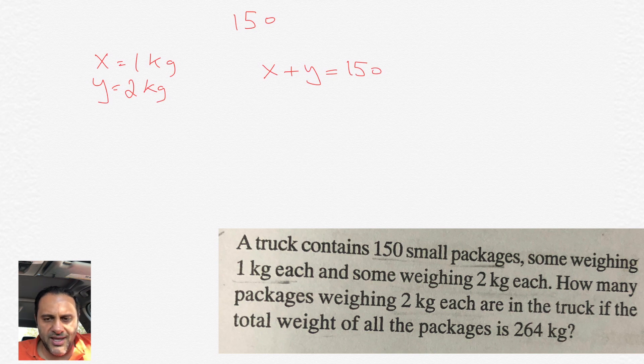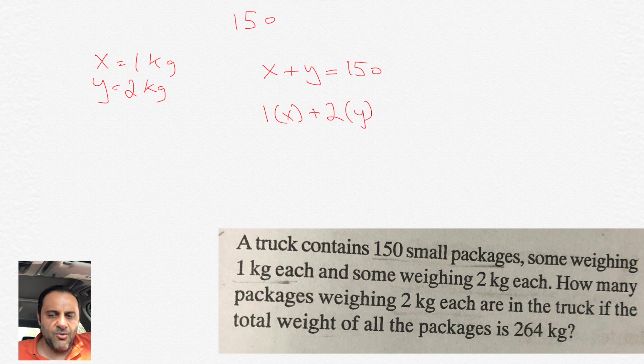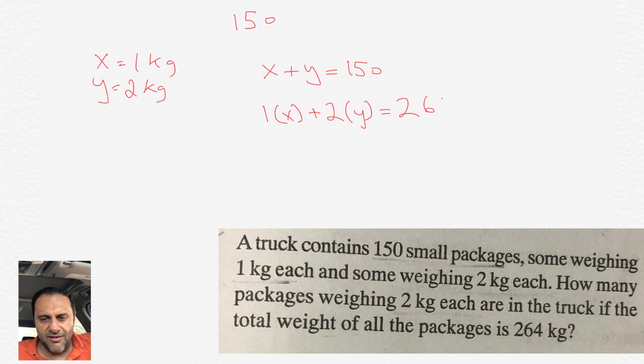We have X plus Y equals 150, and to calculate the weight you would multiply 1 times however many 1 kilogram packages we have plus 2 times however many 2 kilogram packages we have, and the total of that, which would be 1X plus 2Y, has to equal 264.